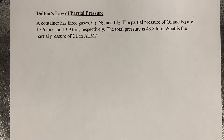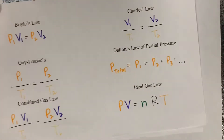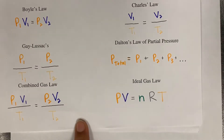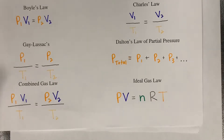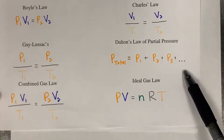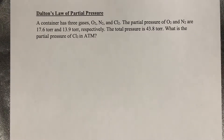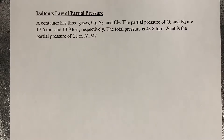The next law we're going to go over is Dalton's law of partial pressure. This law just has to do with pressure. The law states that the total pressure exerted by the mixture of gases is the sum of the partial pressure of each gas. So let's look at the problem. A container has three gases: oxygen, nitrogen, and chlorine gas. The partial pressures of oxygen and nitrogen are 17.6 torr and 13.9 torr respectively. The total pressure is 43.8 torr. What is the partial pressure of Cl2 in ATM?